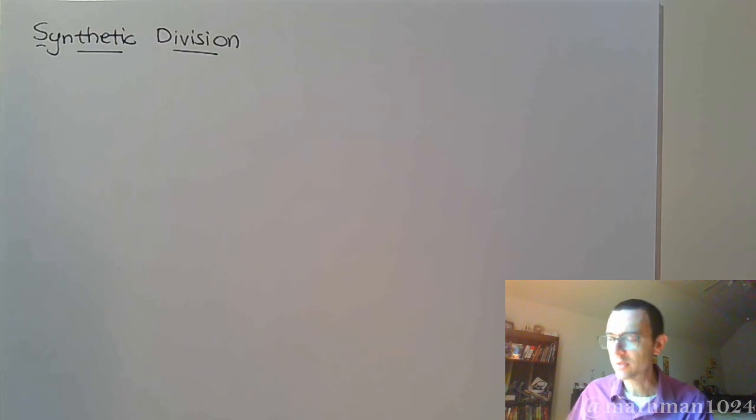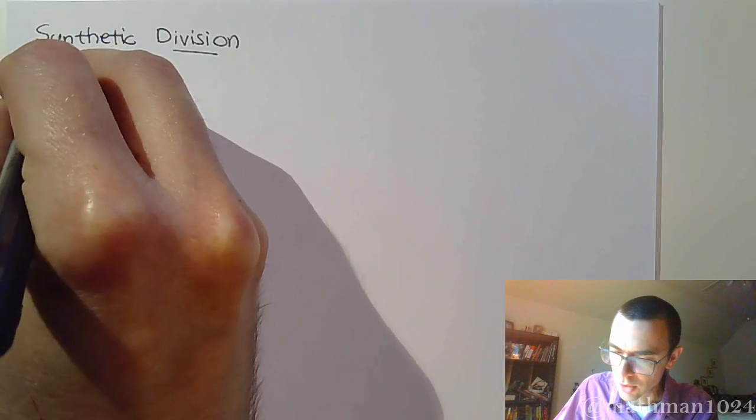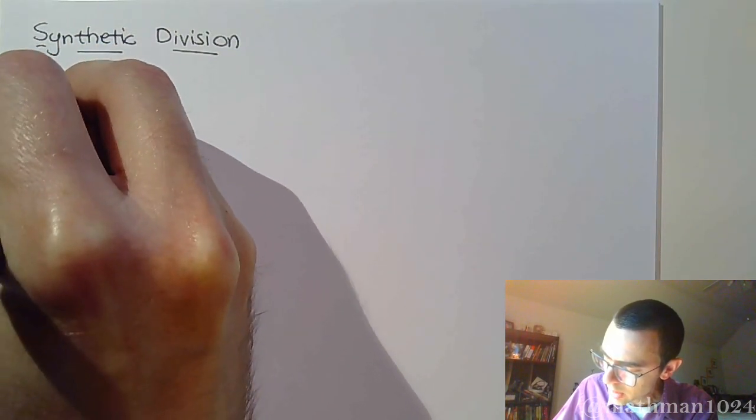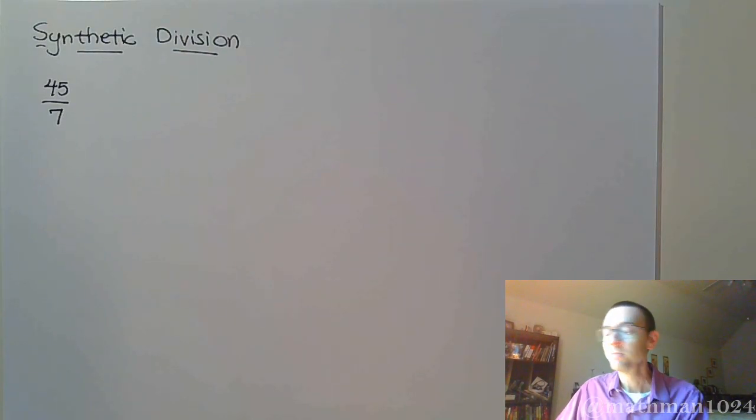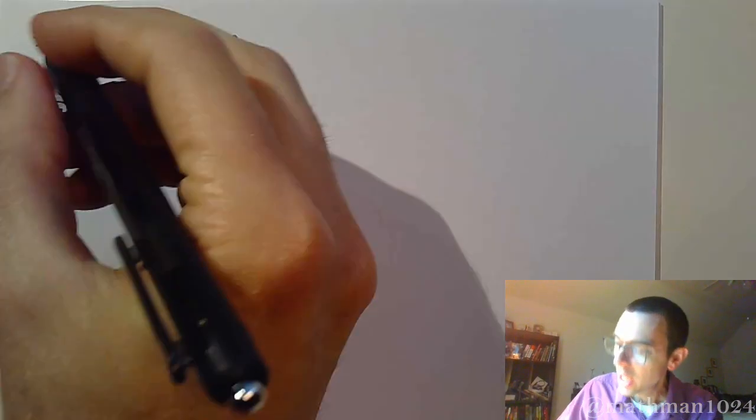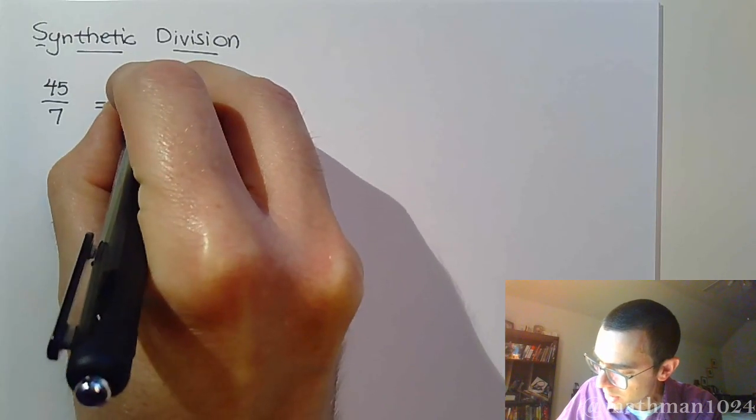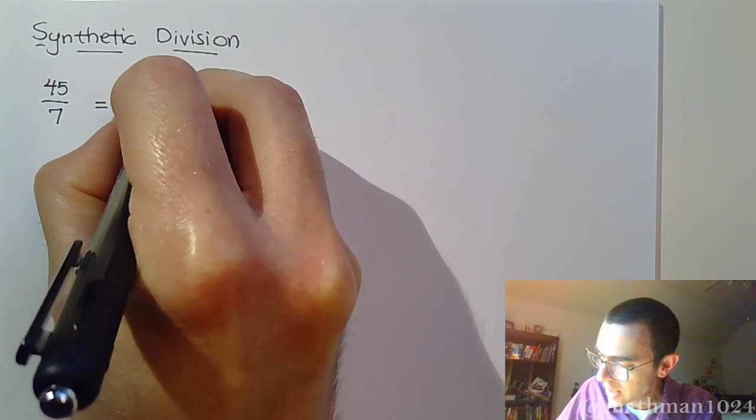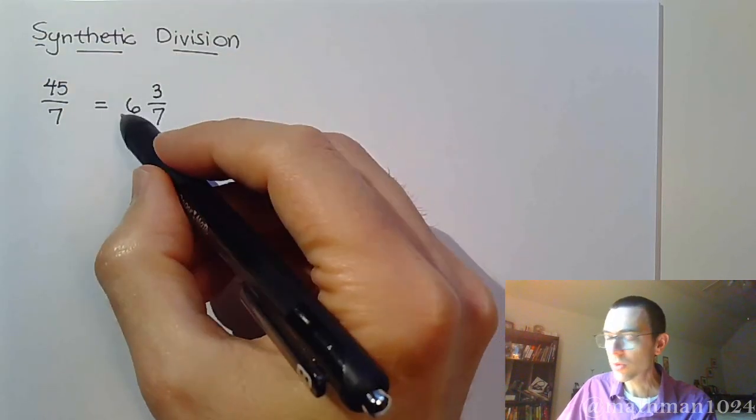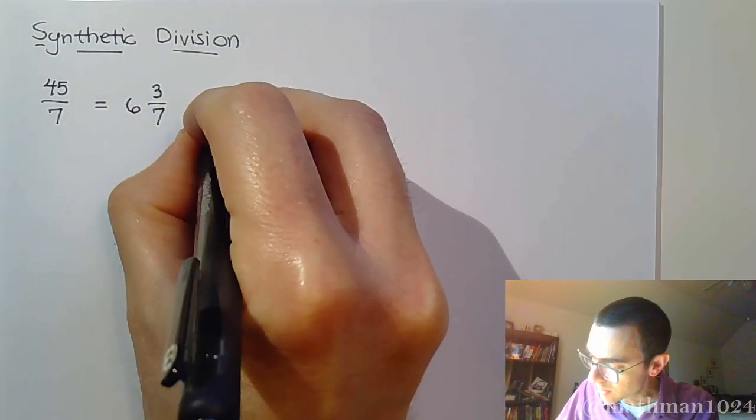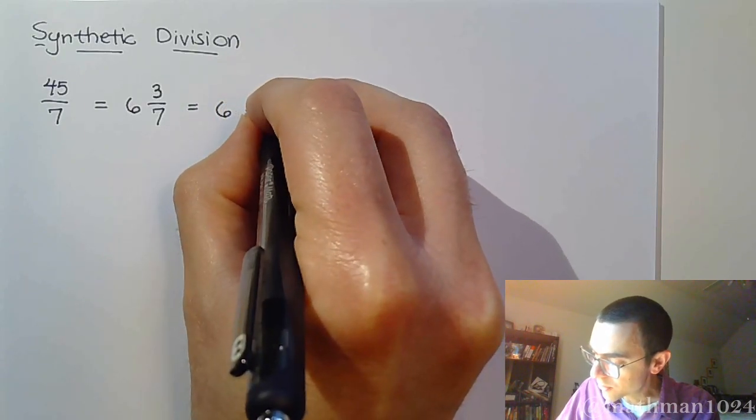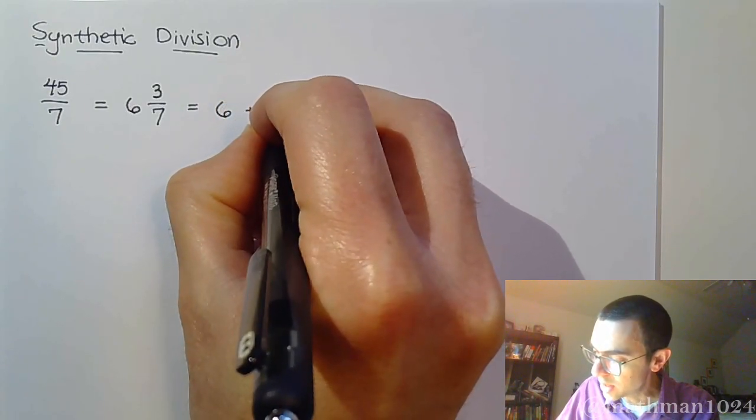So for us to really understand synthetic division, let's go back and consider an improper fraction like 45 over 7. In the past you might have had teachers that said you need to write this in simplest terms. Well, to me this is fine, but they would say write it as a mixed number. And when you do the division, 7 goes into 45 six times with a remainder of 3, and so you would say this is 6 and 3 sevenths. Now, when we write a mixed number like this, what it really means is that you have 6 whole units, and then you have a fractional part left over, 3 out of 7.